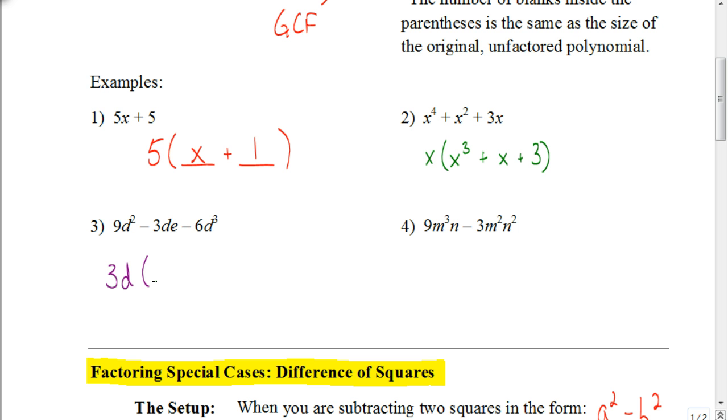So I factor out a 3d. Now let's start with that first term, 9d squared. When I factor out a 3 from 9d squared, 9 divided by 3 is just 3. When I factor out a d from the d squared, I'm left with just d. Let's go to the next term. 3 divided by 3 is 1. Factor out a d, and that is also gone. Since I factored out d, there's just the e left over. So I'd have 3d minus e, or minus 1e if you want to put the 1 in.